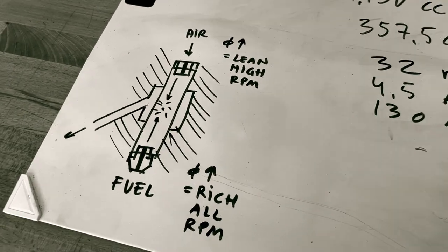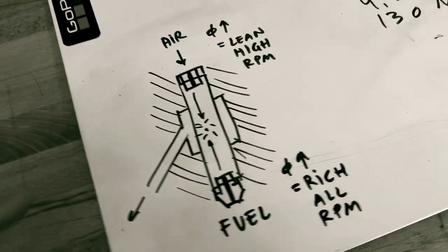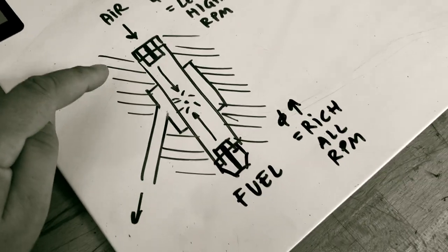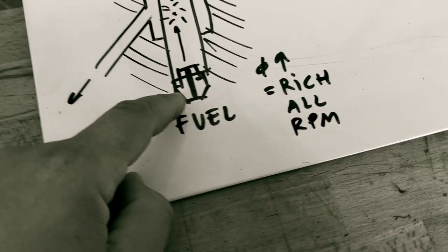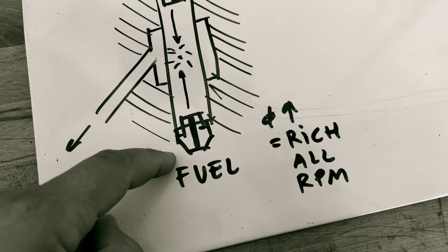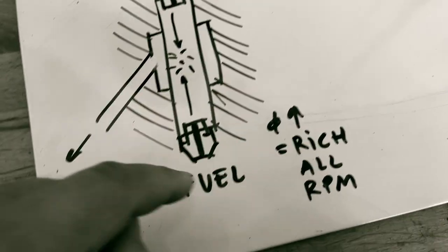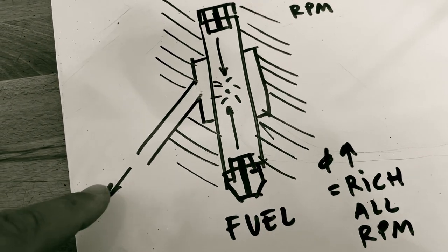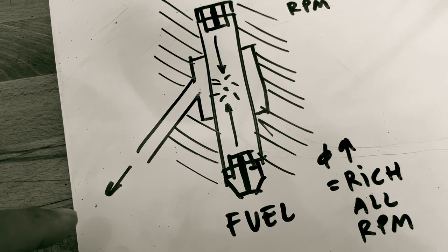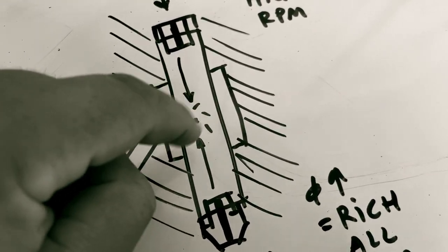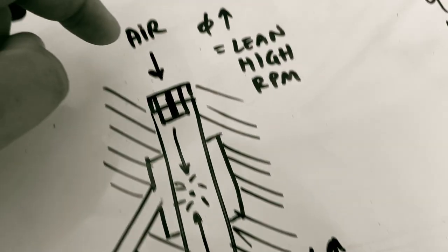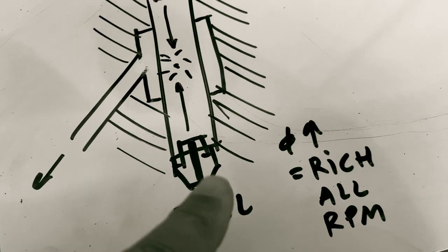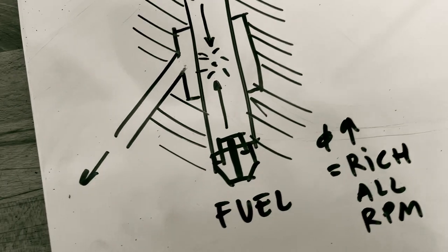Then we have to consider the air jet - the air correction jet - at the top of the emulsion tube. I've made a schematic here. This is the fuel jet at the lower end. It sucks up fuel from the vacuum out here in the main venturi. That's the connection out into the main venturi. And in here we have the emulsion of air and fuel.